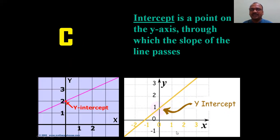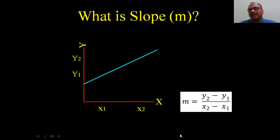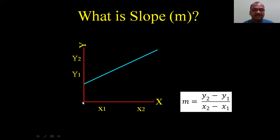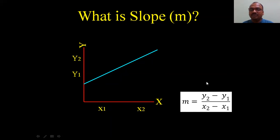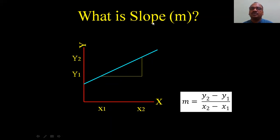Next, slope — what is m? m is nothing but (y2 - y1) divided by (x2 - x1). See here — this is a straight line. On the x-axis I have x1, x2, x3 increasing, and on the y-axis y1, y2, y3, y4 increasing. From those I get a line, and to calculate m: m = (y2 - y1) / (x2 - x1). That is called the slope, and we put m into our equation.